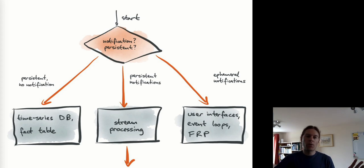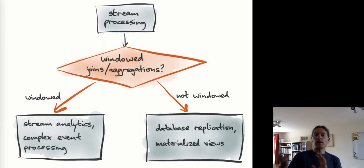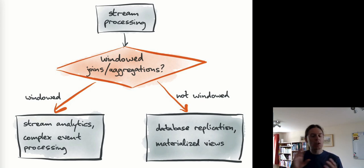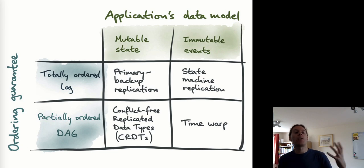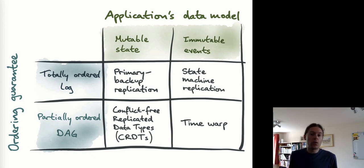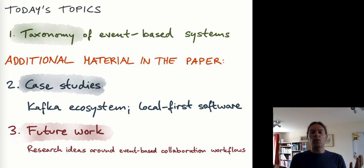To zoom out and recap: we started with the landscape of event-based systems by asking whether we're talking about notifications, persistent records, or both. We then broke down the persistent-notifications channel further, looked at windowing and non-windowing — windowing gives us stream analytics and complex event processing style things, non-windowing takes us toward materialized views and database replication. Then for database replication and materialized views, we did a two-by-two comparison of the data model and the ordering guarantee: immutable events with total order gives state machine replication, immutable events with partial order gives time warp, mutable state with total order gives primary backup replication, and mutable state with partial order gives CRDTs.